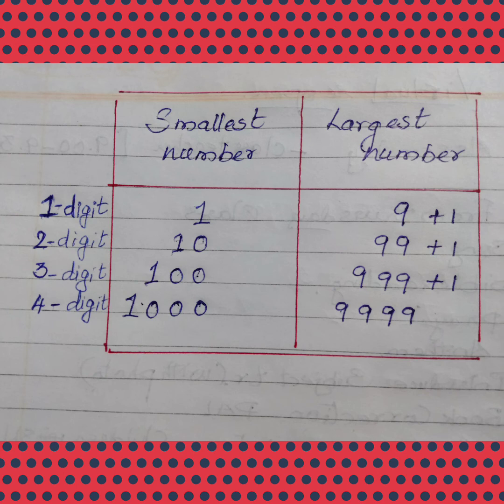Smallest 3 digit number is 100. And the largest 3 digit number is 999. 999 plus 1 will give you 1000. It is the smallest 4 digit number. And the largest 4 digit number is 9999.